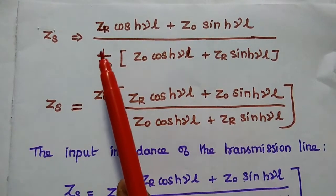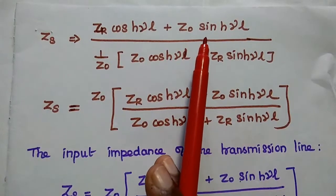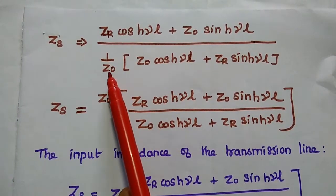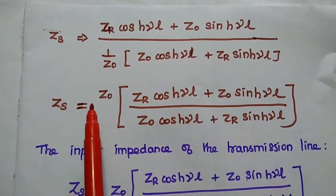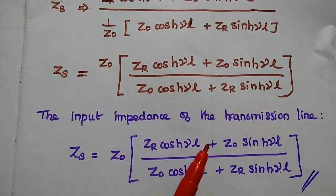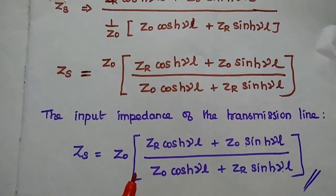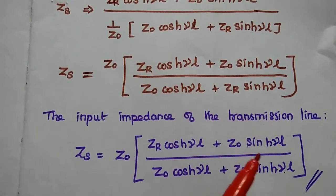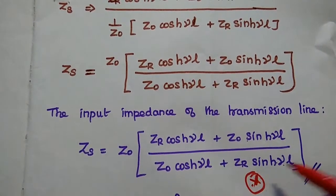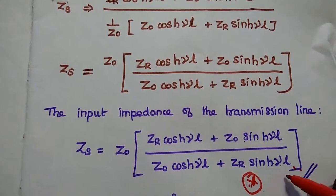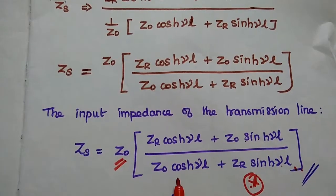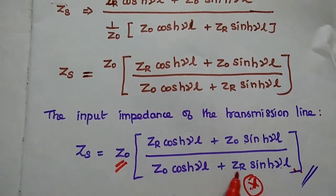In the next step, Zs is equal to Z0 cosh(γl) plus Zr sinh(γl), divided by 1/Z0 times (Z0 cosh(γl) plus Zr sinh(γl)). The denominator of the denominator comes to the numerator. Finally, the input impedance of the transmission line is: Zs = Z0 · (Zr cosh(γl) + Z0 sinh(γl)) / (Z0 cosh(γl) + Zr sinh(γl)). This is a very important formula for input impedance of a transmission line.